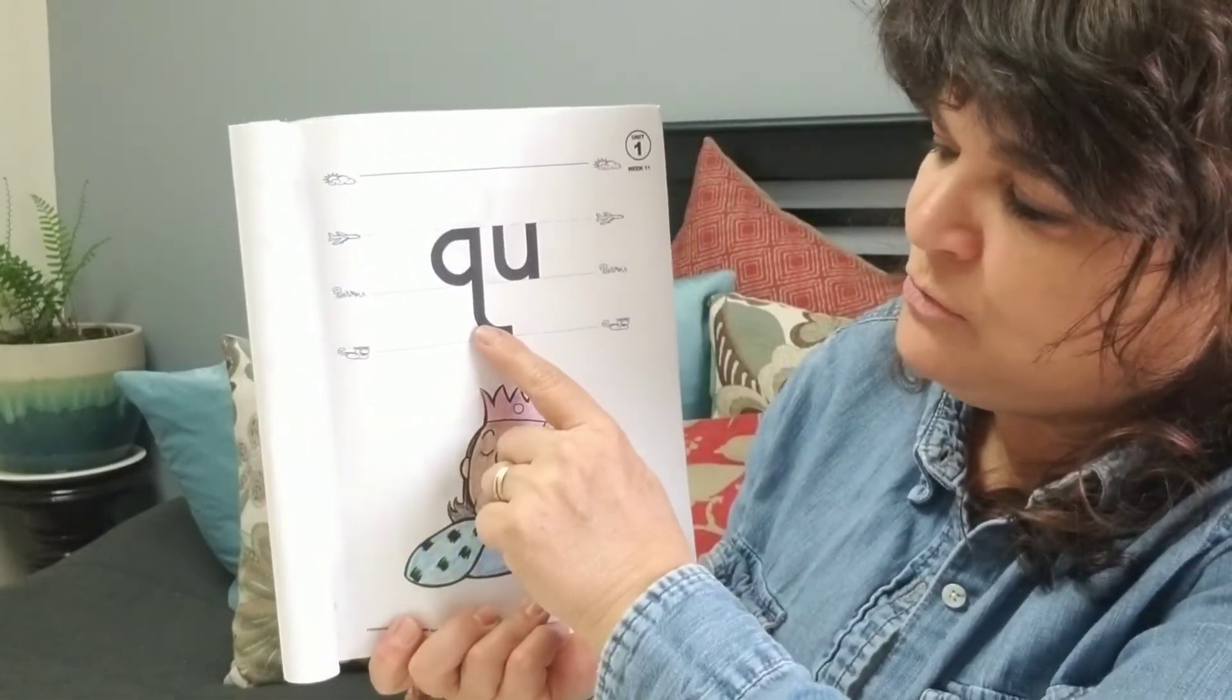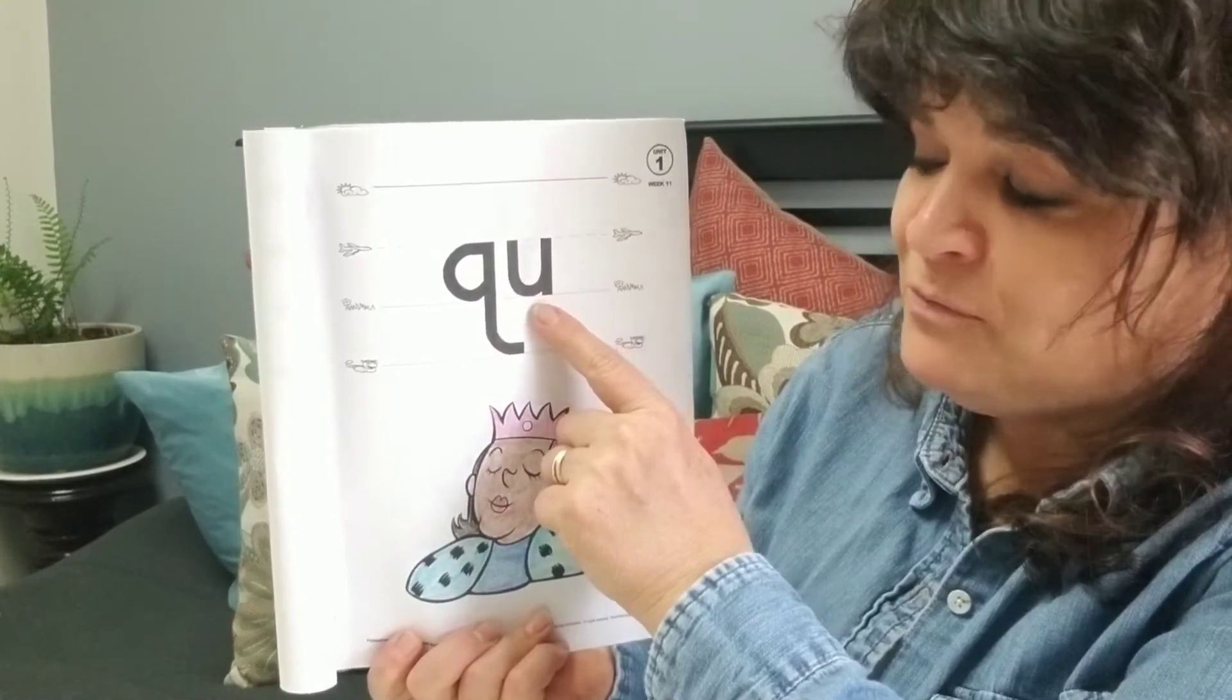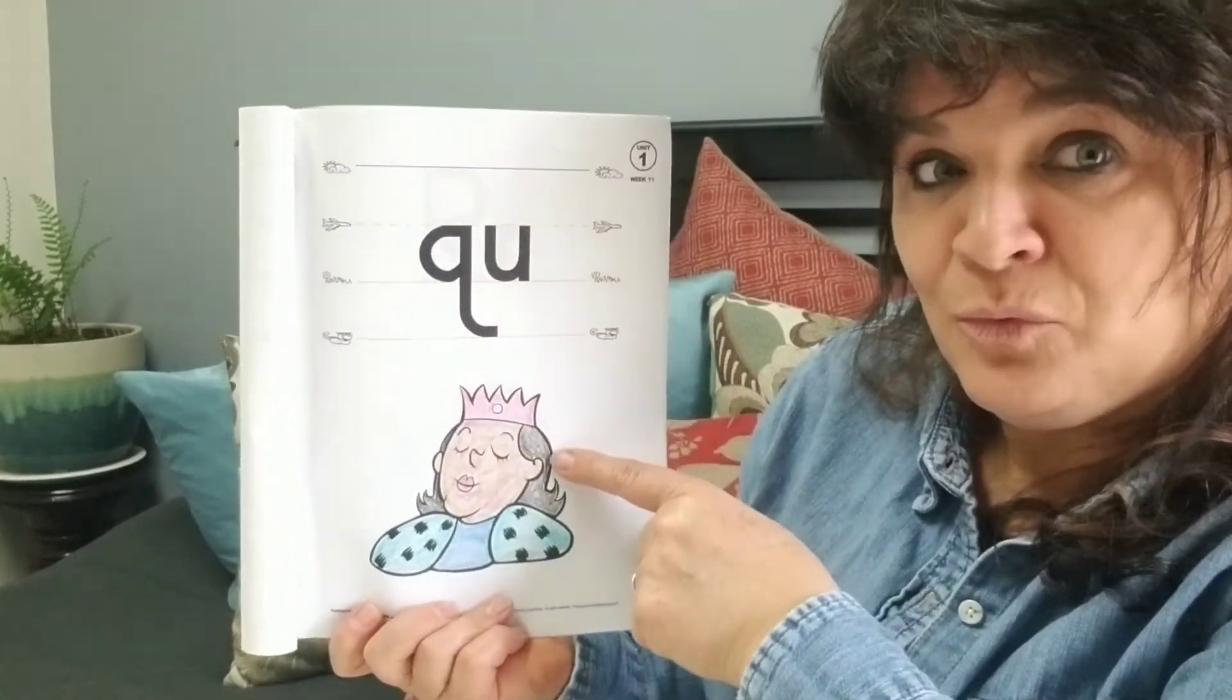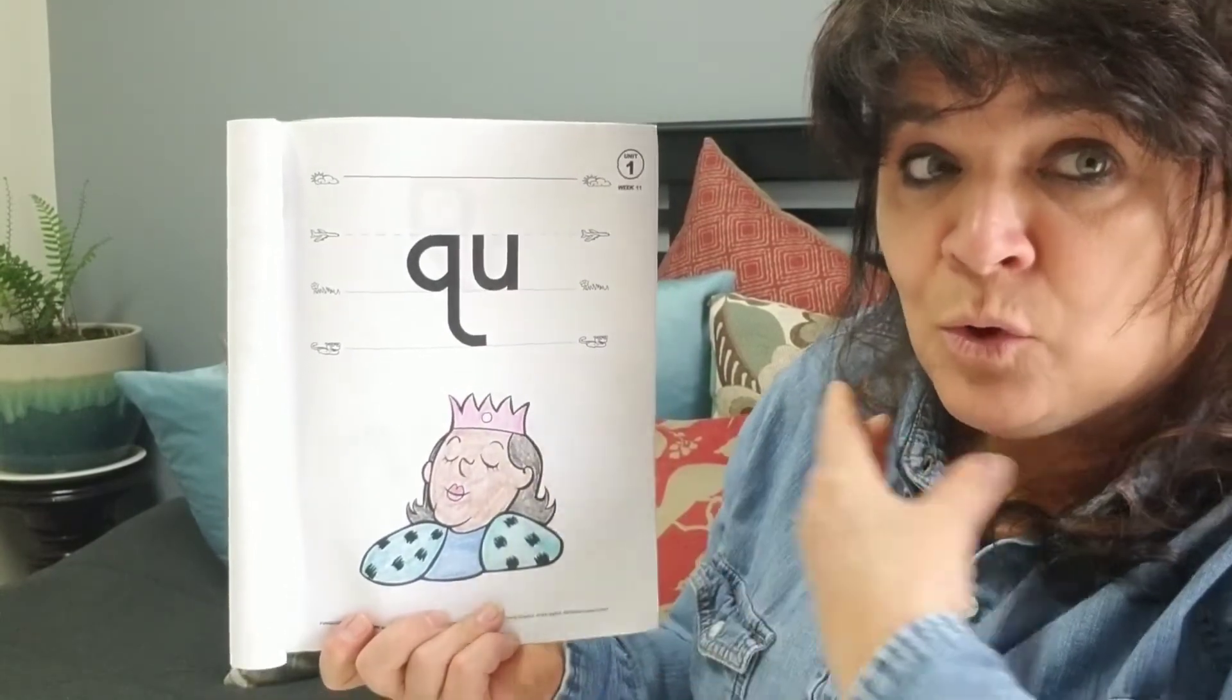Little Q. Little U. Queen. Q-U. Queen. Quh. Quh. Two sounds together.